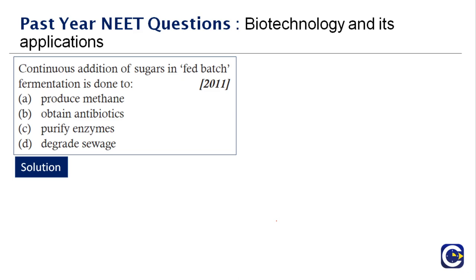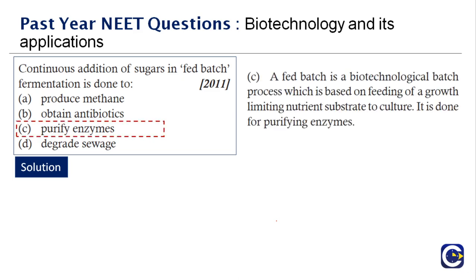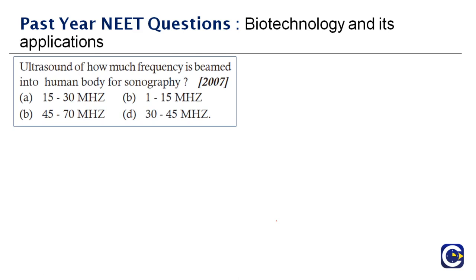Next question: continuous addition of sugars in fed-batch fermentation is done to — a fed-batch fermentation is a biotechnological process based on feeding growth-limiting nutrient substrate to culture. High sugar or salt content prevents spoilage by inhibiting other microbes, so the continuous sugar addition is done to purify enzymes. Therefore the right answer is option C.